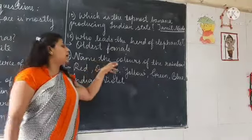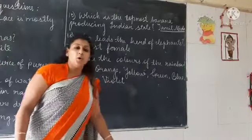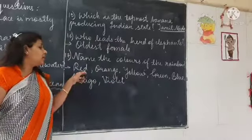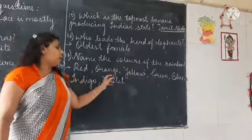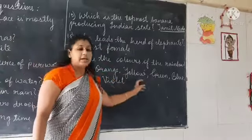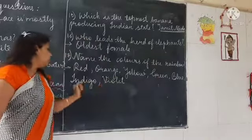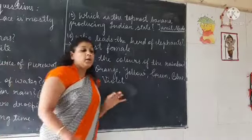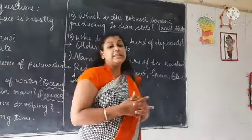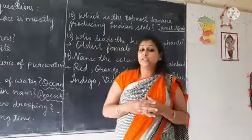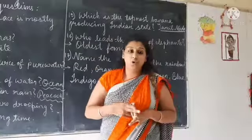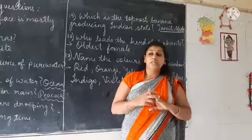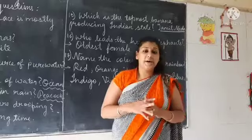Number 17, the last question: Name the colors of the rainbow. We all know — red, orange, yellow, green, blue, indigo, and lastly violet. So in this chapter we have seen hard words, then two or fours, and then question and answers.